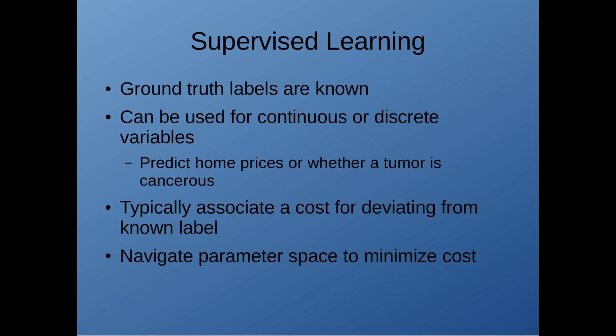As you learned in part one, supervised learning is perfect when you know the ground truth labels for some set of training data. This can be used for continuous or discrete variables. So for instance, if you want to predict home prices or whether a tumor is cancerous, you can use supervised learning in both of those cases.